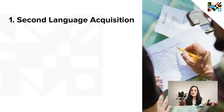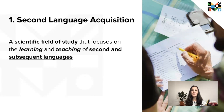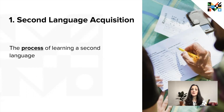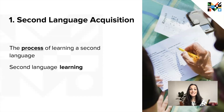Our very first term is second language acquisition. Second language acquisition is a scientific field that focuses on the learning and teaching of second and subsequent languages. It's a subfield of linguistics, which is the scientific study of language. Second language acquisition is kind of a mouthful, so people usually just call it SLA for short. Second language acquisition can also refer to the process of learning a second language, and this meaning is synonymous with second language learning.